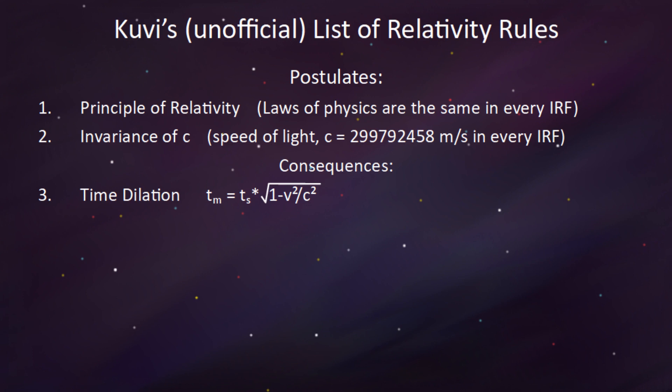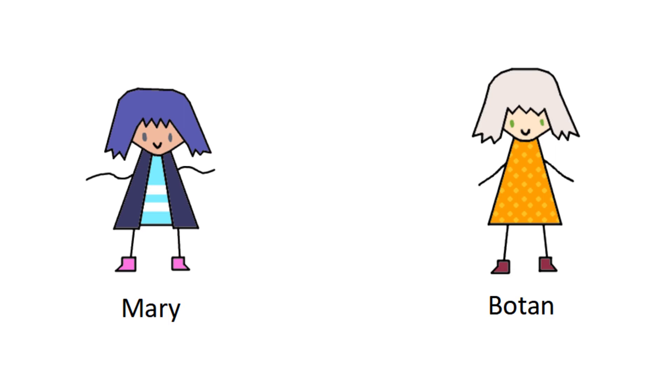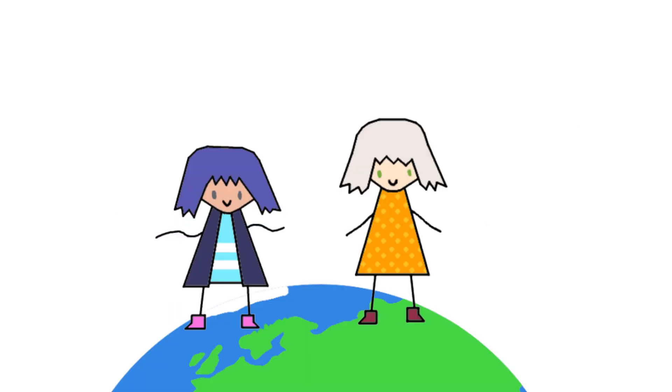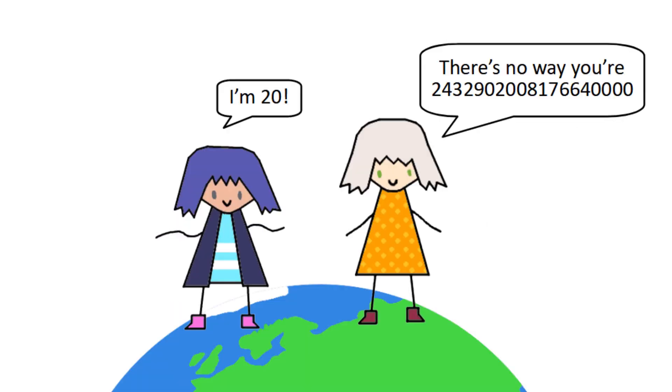With the equation for time dilation, we can now apply it to an example. There are two observers, Mary and Botan. They both start off on Earth at the same age of exactly 20 years old. Botan remains on Earth,